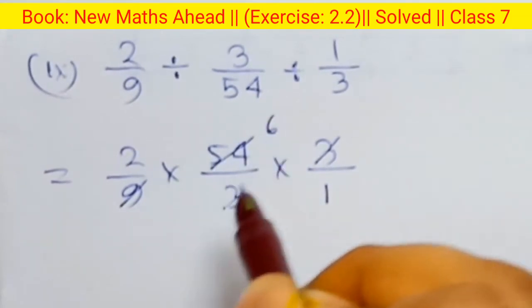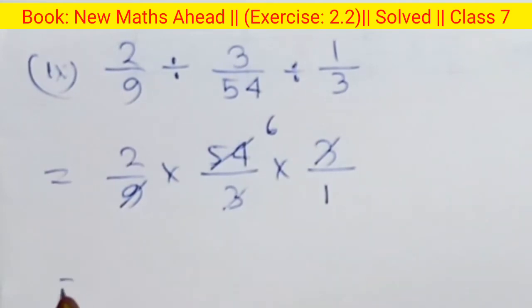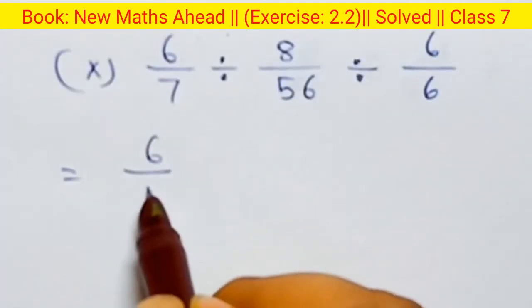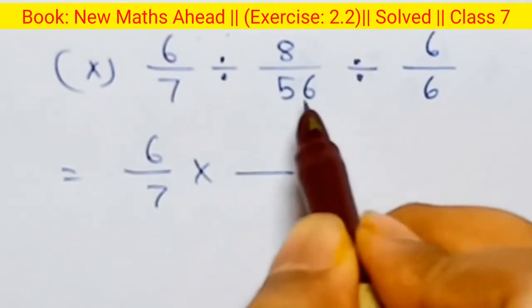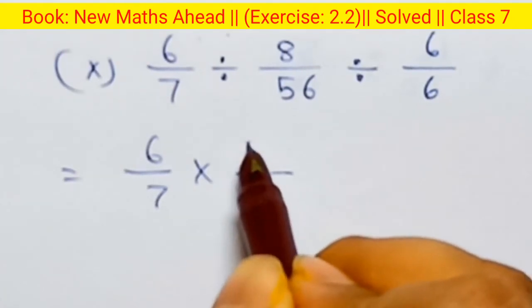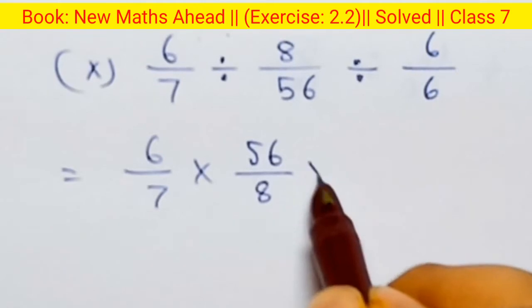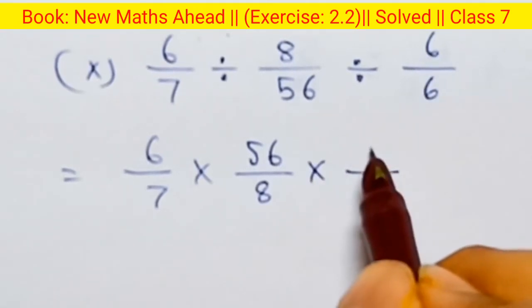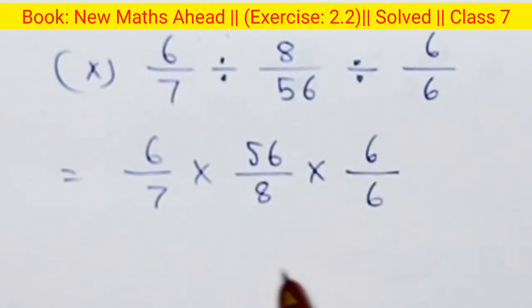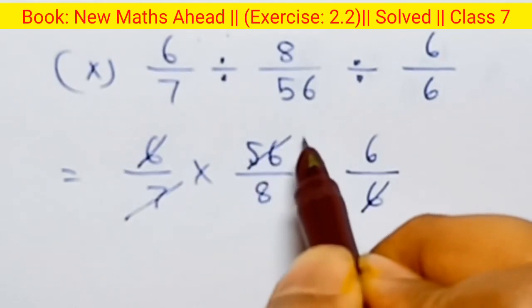Six squared — value is 54. Two into six equals twelve — answer is twelve. Six by seven into eight by fifty-six: reciprocal gives 56 by 8. Next, multiplication — answer: six by six. Separate: eight and six cancel, eight and six cancel — seven eights are 56. Eight and eight cancel — answer is 3. Only six.